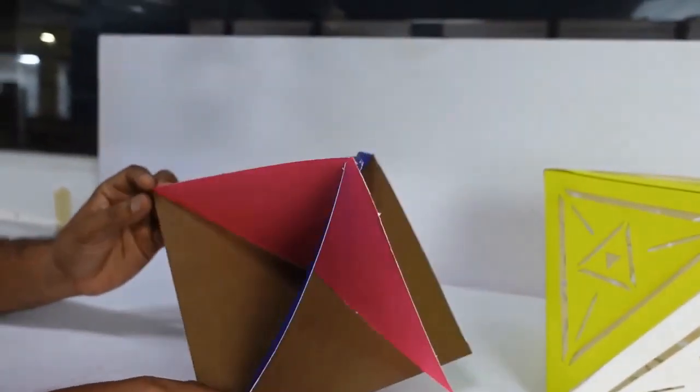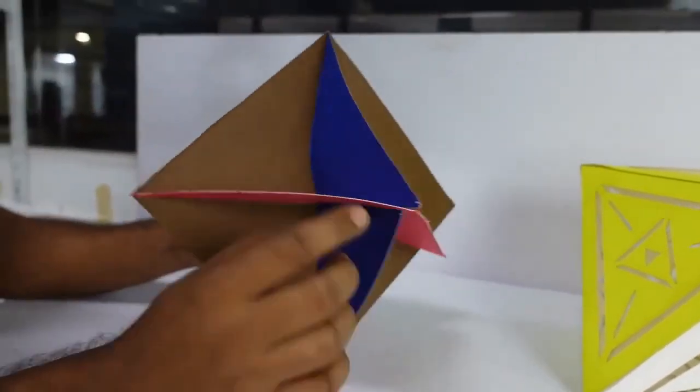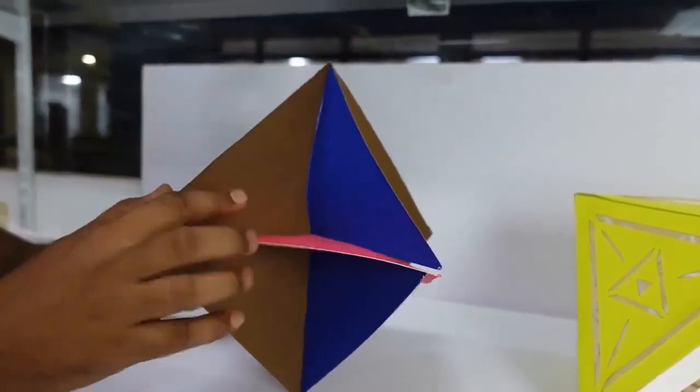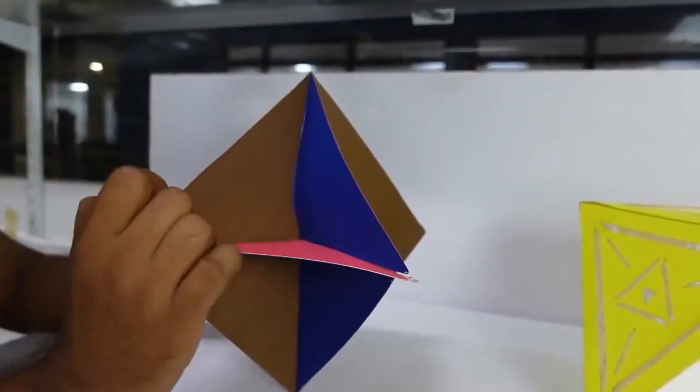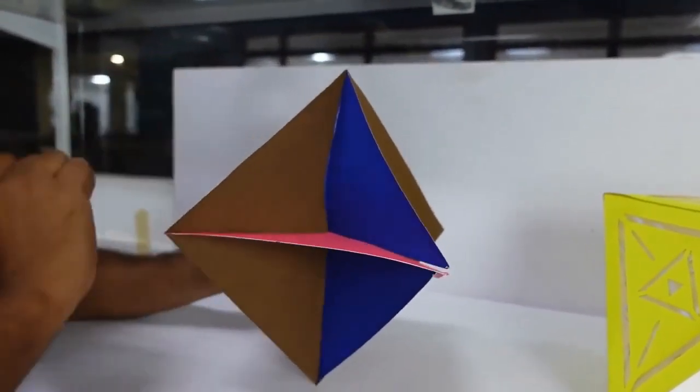A very interesting thing in this is that the equilateral triangles that you can see here, if I take the midpoint of these and join all of them, the shape that can be seen is a cube. Yes, it is a cube.